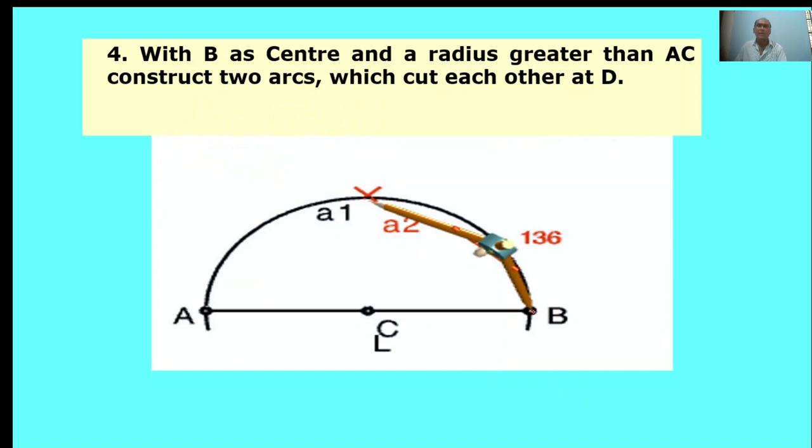Here, B is the center point. Same radius. Take the radius, draw one arc. This arc cuts the previous arc. Arc A1 intersects here. The intersect point is D. This is called point D.